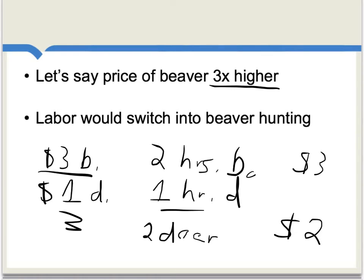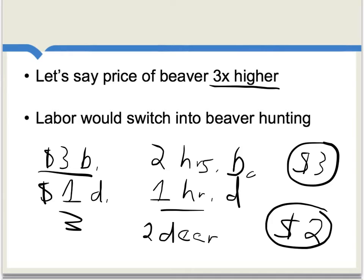We can see that the return from killing beaver — three dollars — is higher than the return to killing deer. That's not an equilibrium. People will switch out of deer hunting and into beaver hunting until the price of beavers falls and the price of deer rises, getting back to Smith's postulated equilibrium.